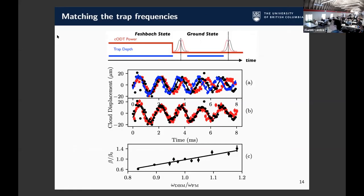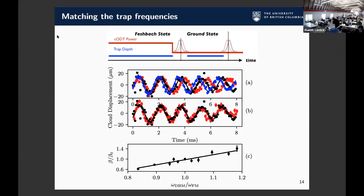There's an additional wrinkle: the trap depth for the ground state molecules isn't necessarily the same as for your Feshbach molecules. We see this by measuring the trap frequency and finding a power that will match it for the two levels. Figure A shows dipole oscillations for atoms — a 5% variation in the trap frequency is something you can easily see because there's a pretty significant difference when you take this out to 8 milliseconds. The black trace shows deeply bound molecules and the red trace shows Feshbach molecules, and we're pretty convinced we're matching these trap frequencies accurately.